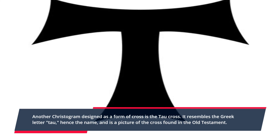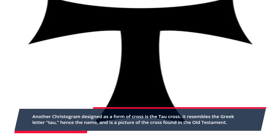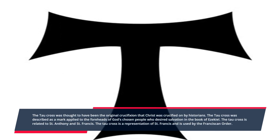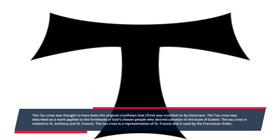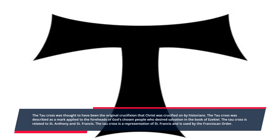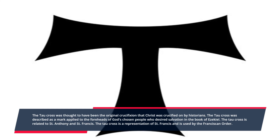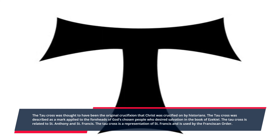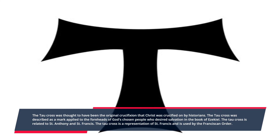Number eleven: the Tau Cross. The Tau Cross is another Christogram designed in the form of a cross, resembling the Greek letter Tau. Historians believed it was the original cross on which Christ was crucified. In the Book of Ezekiel, the Tau Cross was described as a mark applied to the foreheads of God's chosen people who desired salvation. The Tau Cross is related to Saint Anthony and Saint Francis, and is used as a representation by the Franciscan Order.